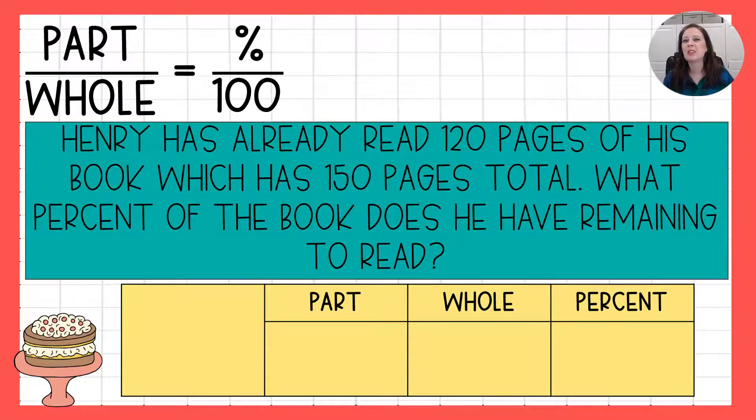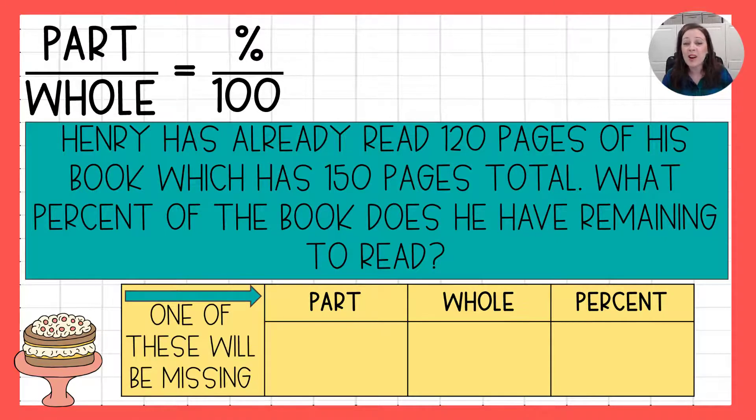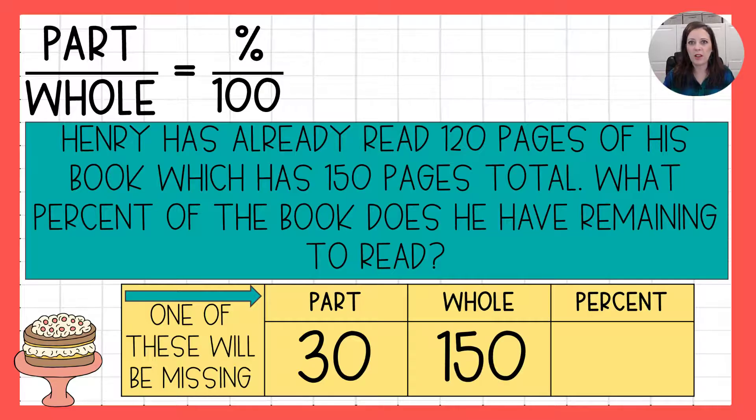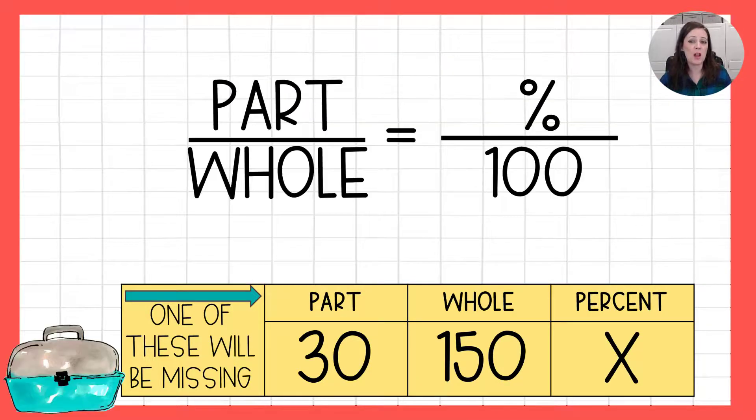Next question, all about Henry. He's already read 120 pages of his book, which has 150 pages total. What percent of the book does he have remaining to read? Remember, we're going to have a missing part, and I hope that you caught it. This is another tricky one. He has 30 pages remaining to read. The part is not 120, because that's what he's already read. And the question says, how many does he have remaining? How many does he have left? So the part is 30. The whole, the whole book is 150 pages. The percent is what we're trying to figure out. Let's plug it into our favorite proportion here, and that's going to set us up ready to solve.